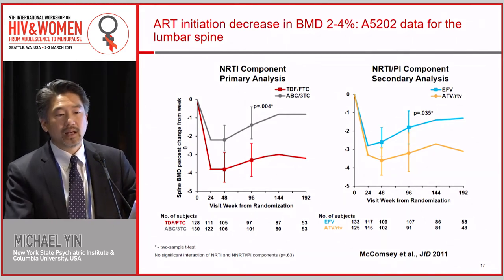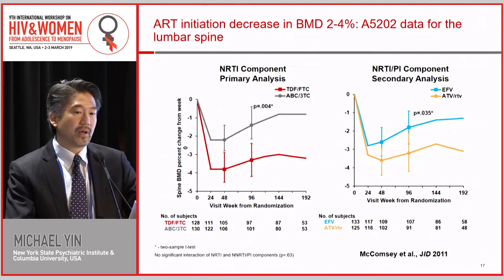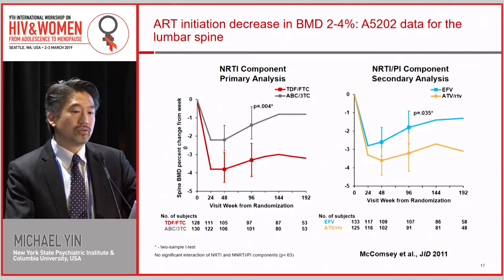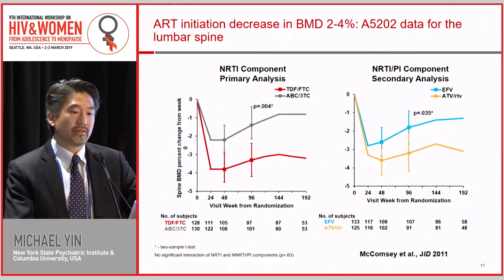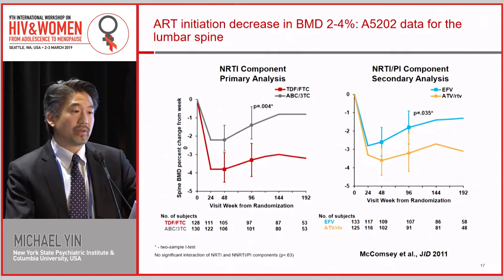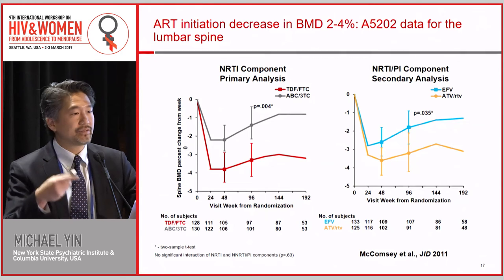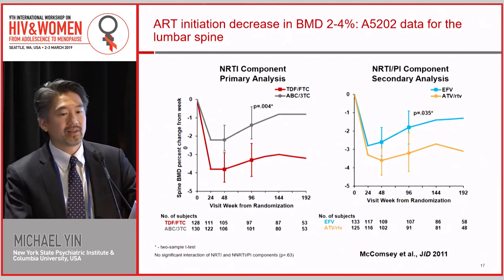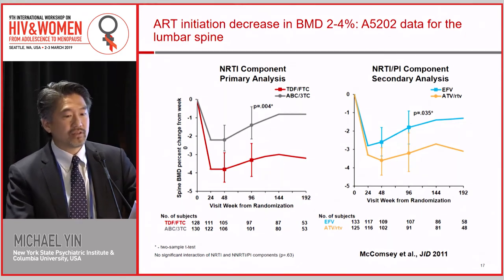This figure from an ACTG study looks at two different NRTI combinations — tenofovir/FTC and abacavir/3TC — paired with either efavirenz or atazanavir boosted by ritonavir. You can see that there are differential effects of different combinations of antiretrovirals on bone density.